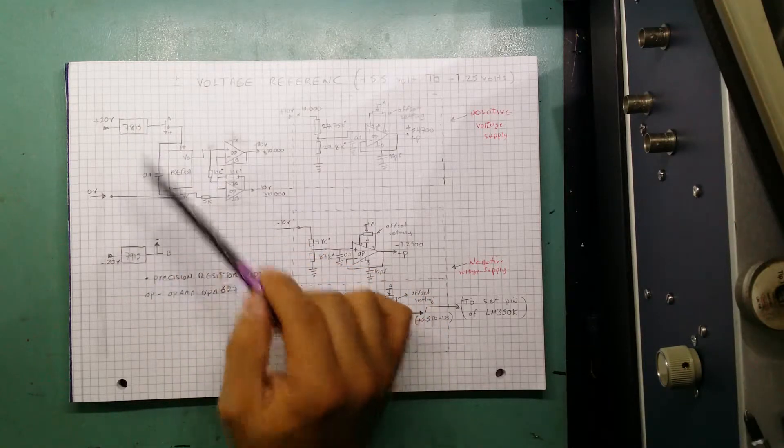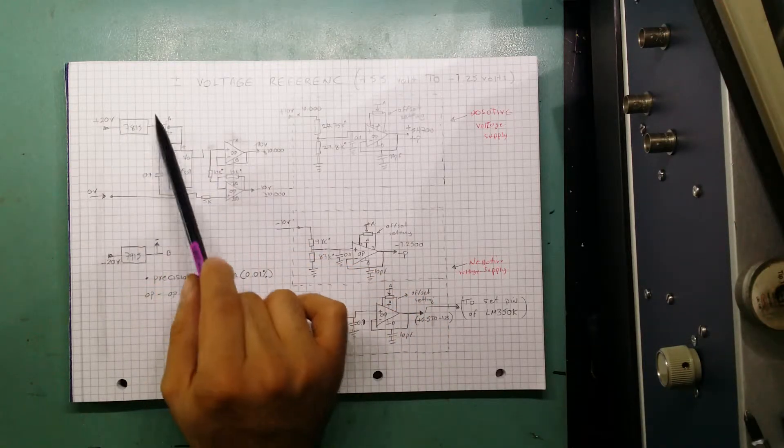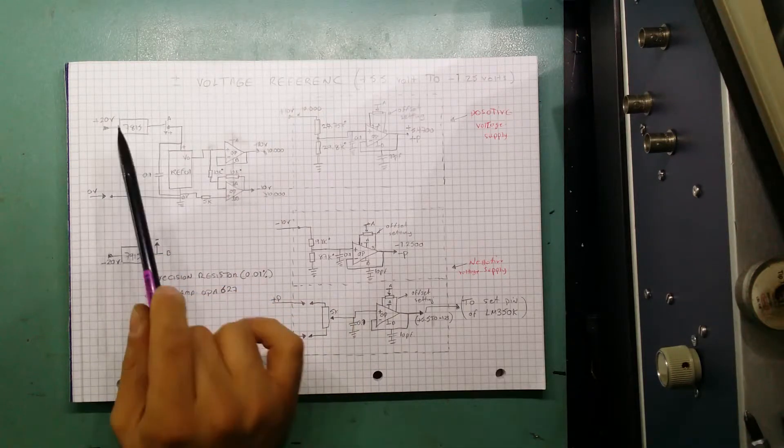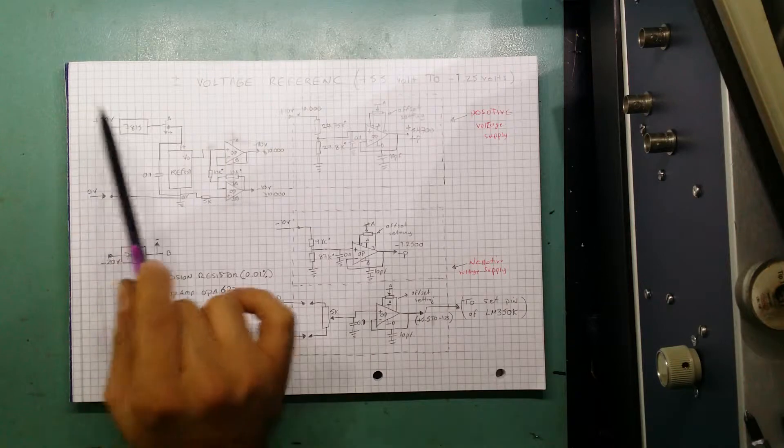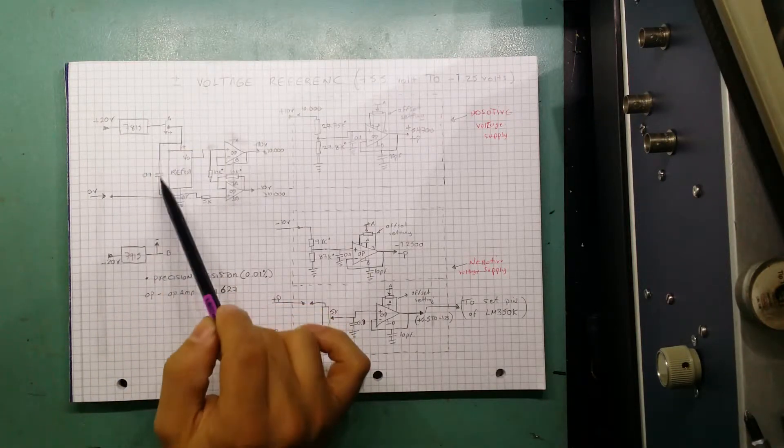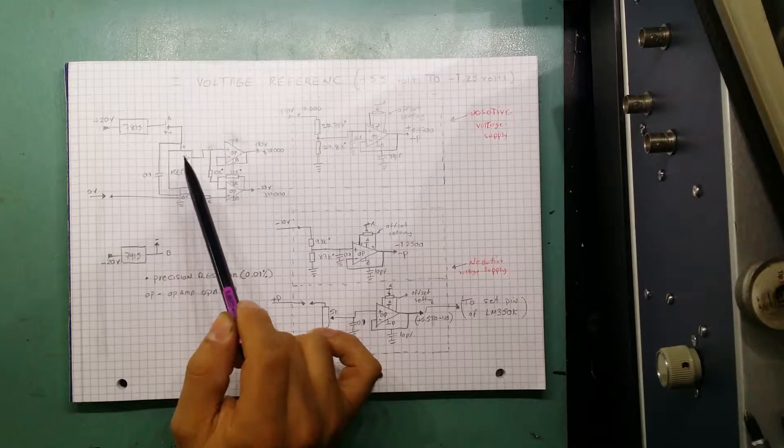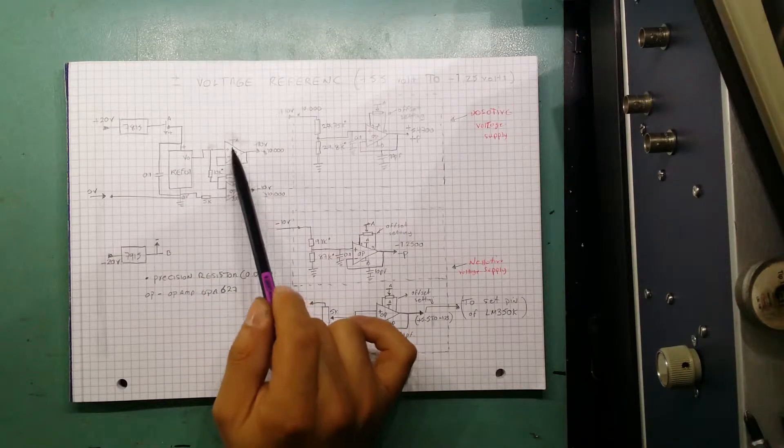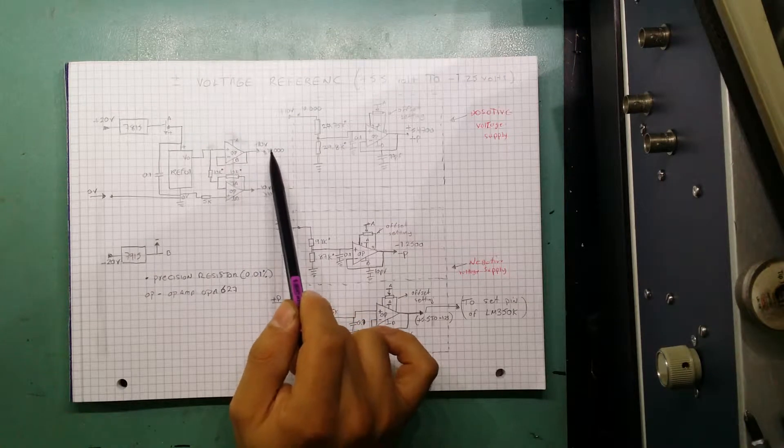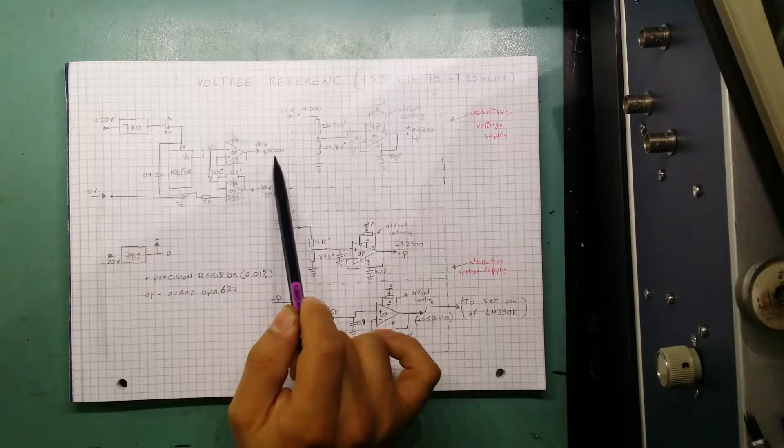So what I've done is I've got two voltage regulators, 7815 and 7915. I'm feeding 20V from my transformer into them and I'm getting plus and minus 15V. I'm feeding the plus 15V into the voltage reference and the output of that has been buffered by an op-amp to give me a precision 10V.